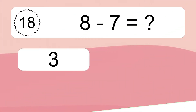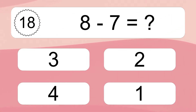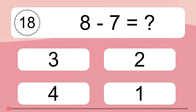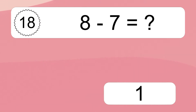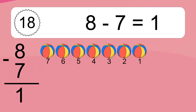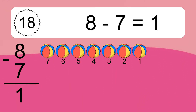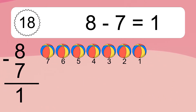8 minus 7 equals what? 8 minus 7 equals 1. Let's count it. 7, 6, 5, 4, 3, 2, 1.